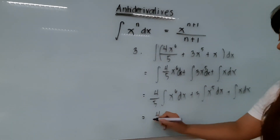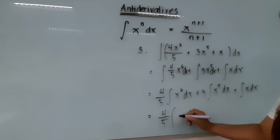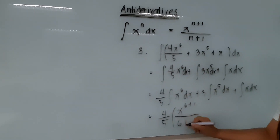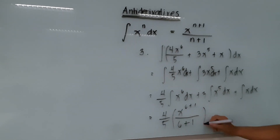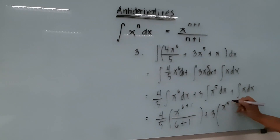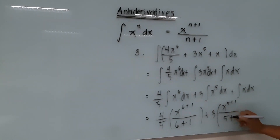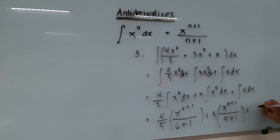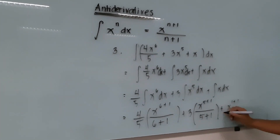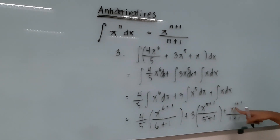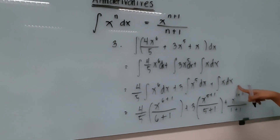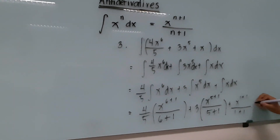Integrating part by part: 4 over 5 multiplied by x raised to 6 plus 1, over 6 plus 1; plus 3 multiplied by x raised to 5 plus 1, over 5 plus 1; plus x raised to 1 plus 1, over 1 plus 1. Note: every variable is raised to 1, so x by itself is x raised to 1. Plus C.